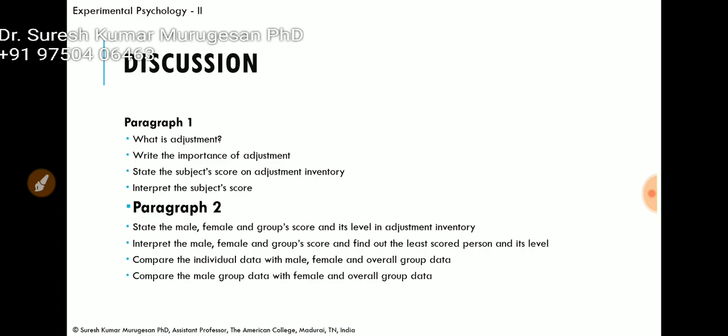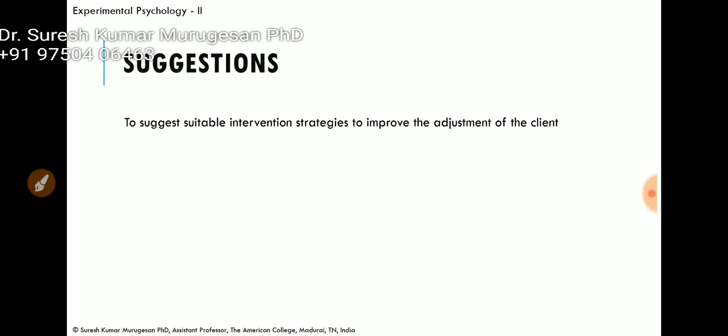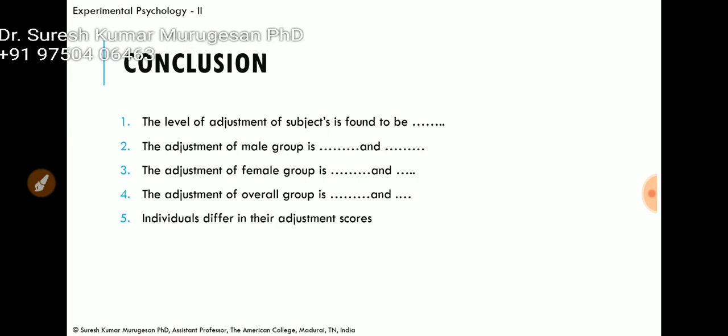In the discussion part, there are two paragraphs to write: the first paragraph is about adjustment, and the second is about the group data, comparison of data, and suggestions. In the suggestion part, we have to write about how to improve the adjustment level of the client. Finally, in the conclusion, we record the findings — starting from the individual subject's adjustment level, then the male group, female group, and overall group, noting whether individuals in the group data differ or not.